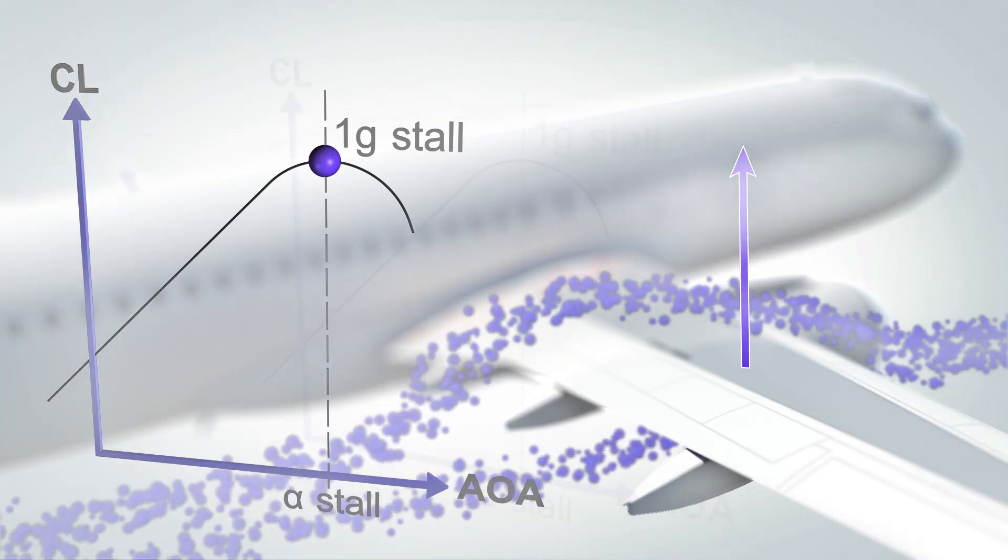Another speed in the low speed domain is the VLS. Its computation does not depend on the angle of attack.